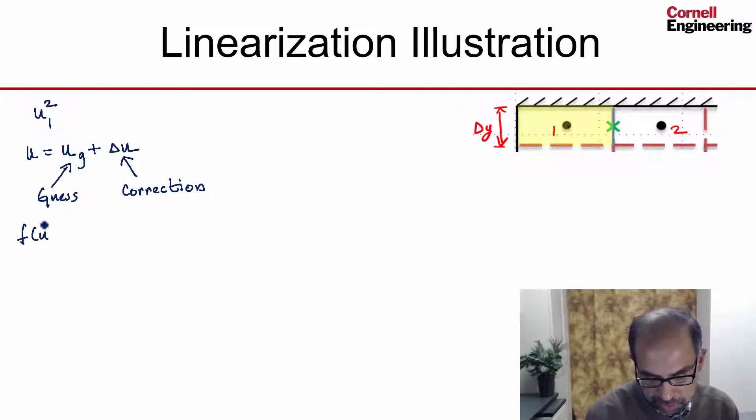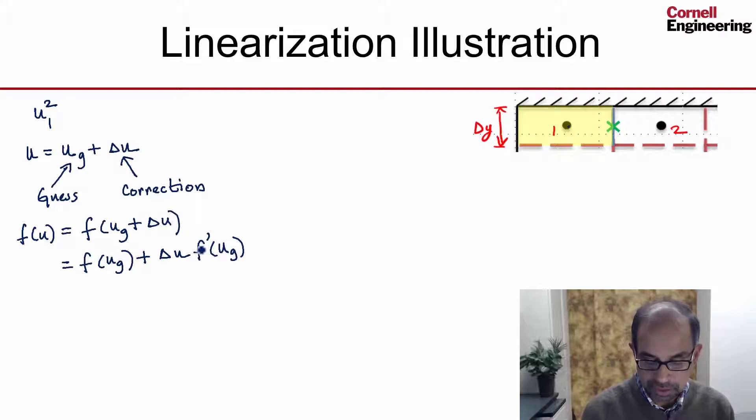And if I had a function of u, I can write that as function of u guess plus the correction and expand that in a Taylor series. So I'll get f of u guess plus delta u times f prime of u evaluated using the guess. So that's nothing but the derivative of f with respect to u plus delta u squared over 2, the second derivative of f with respect to u, and again evaluated using the guess, plus higher order terms.